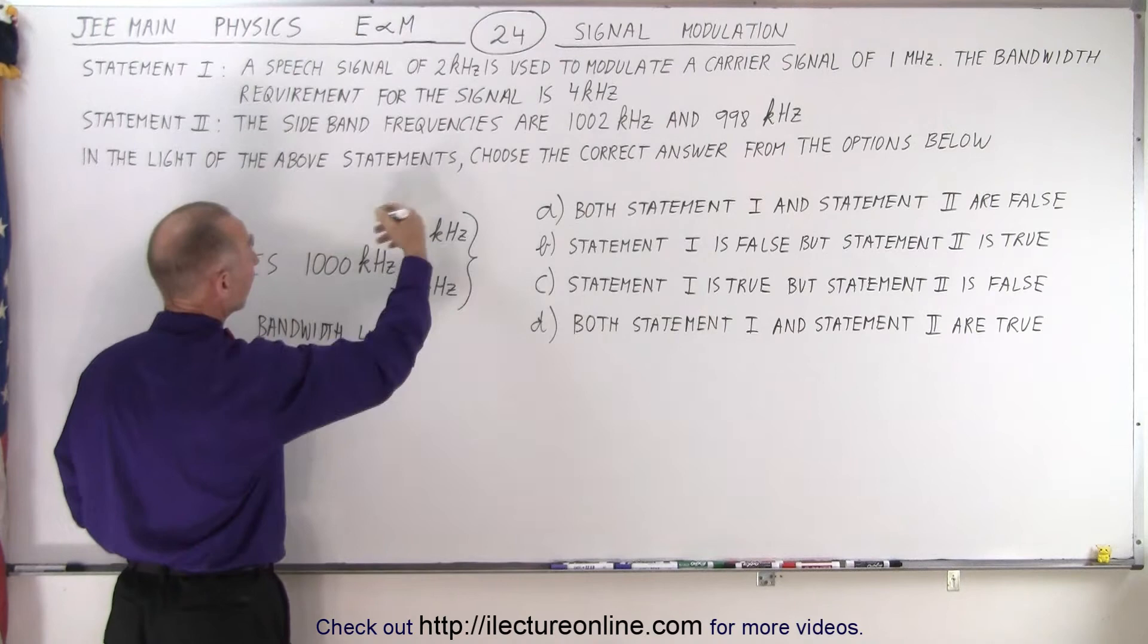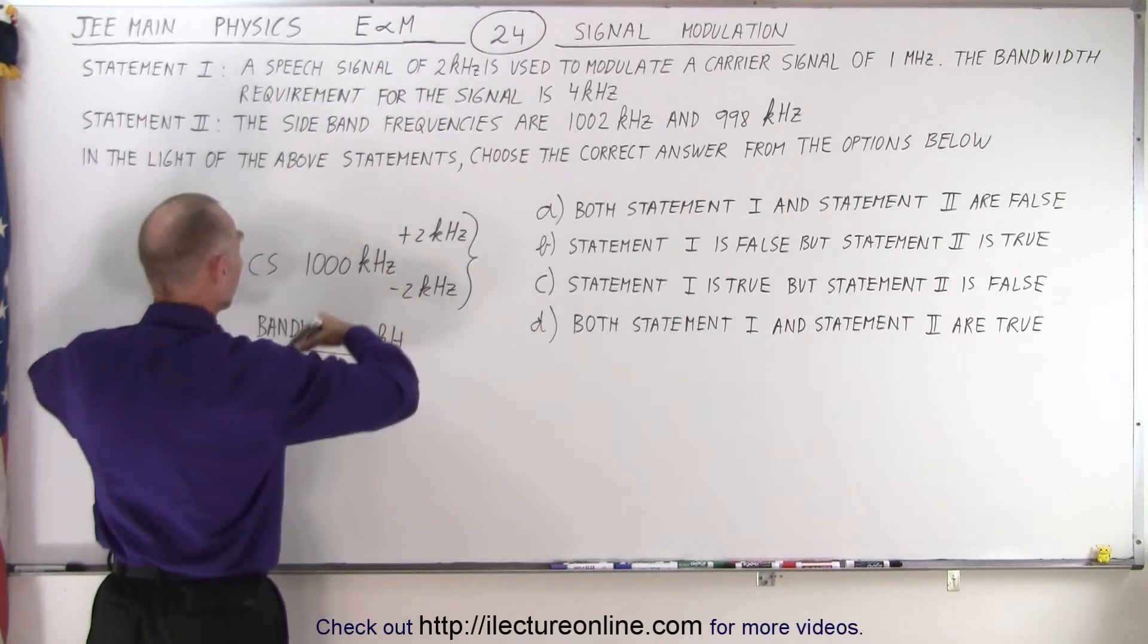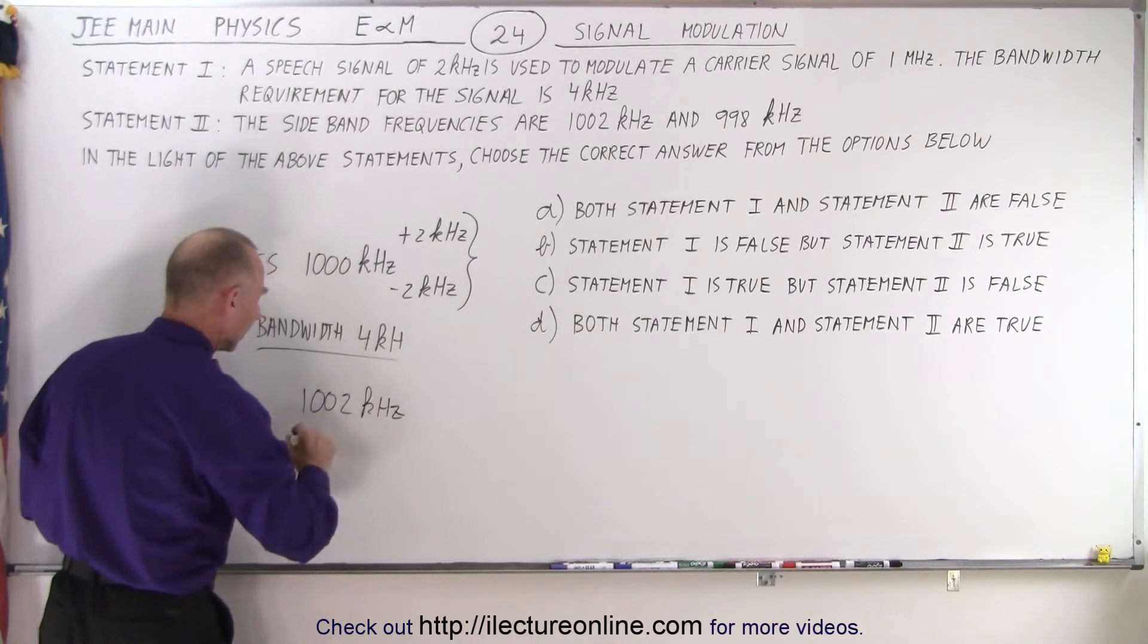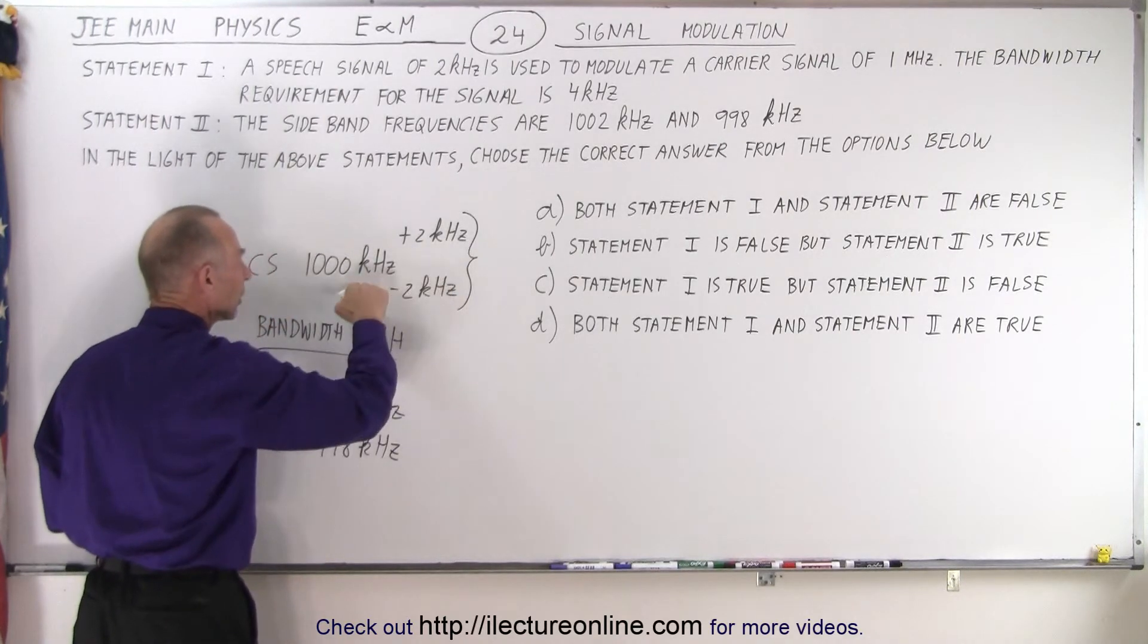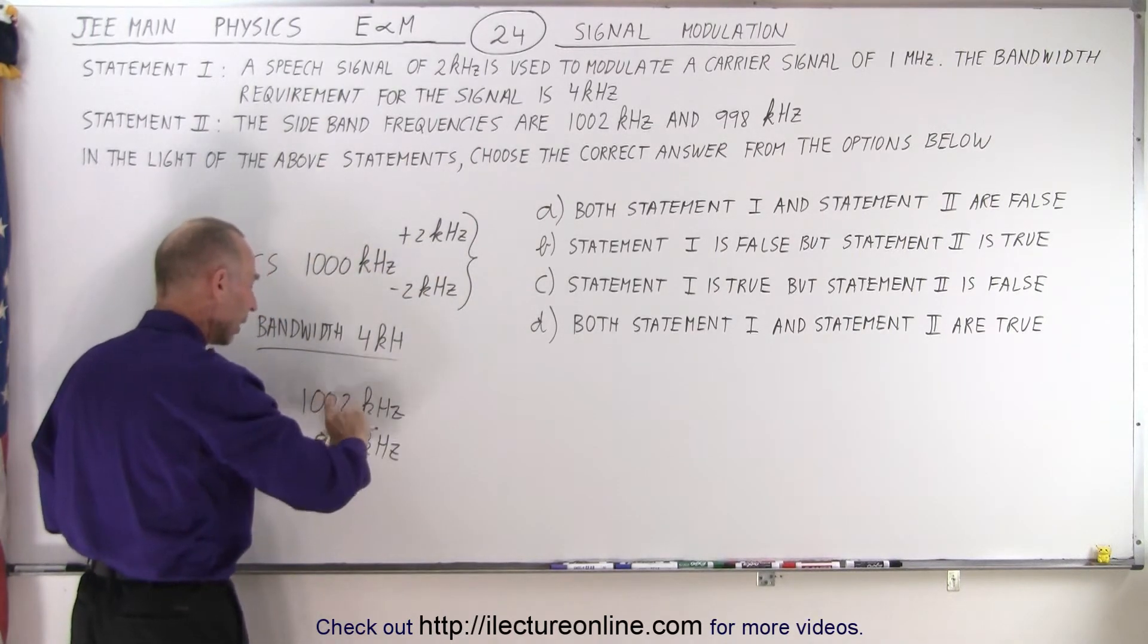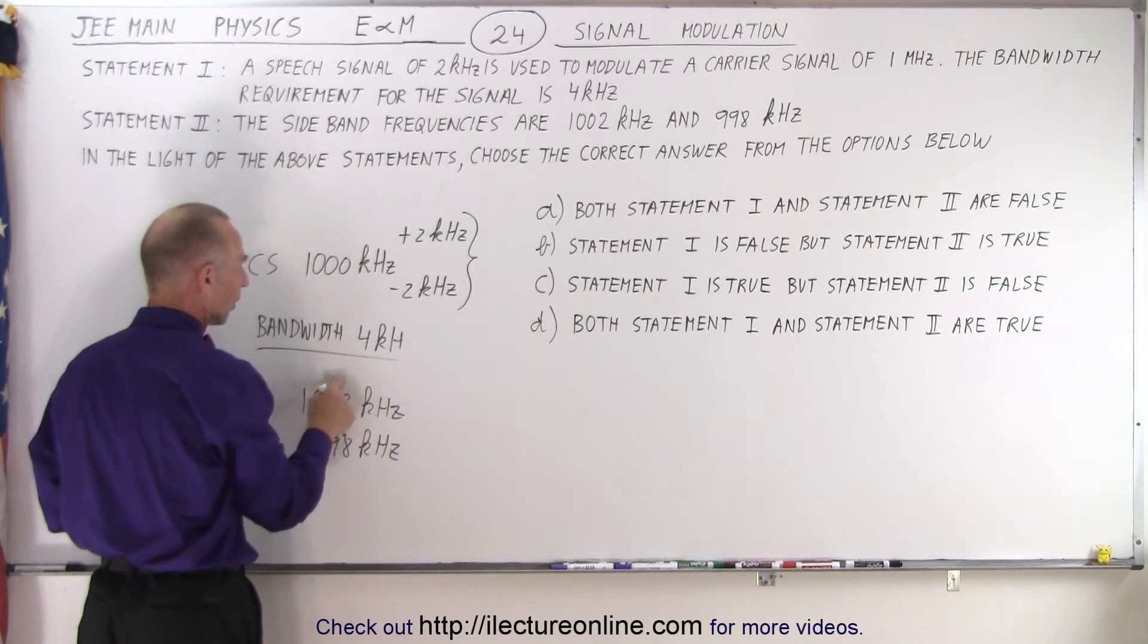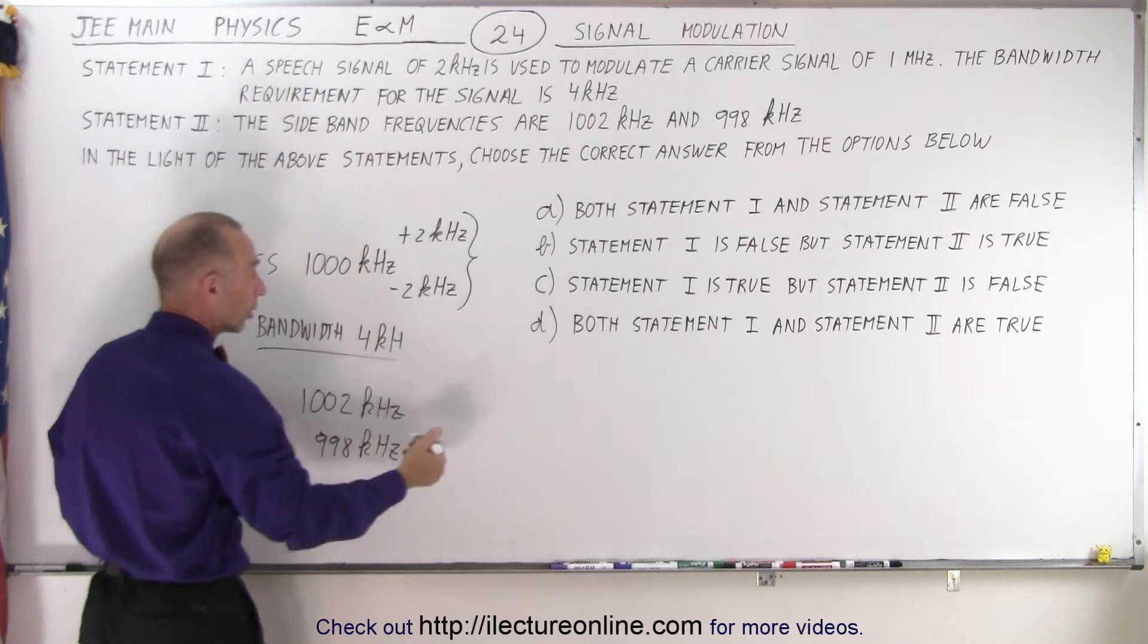So that means that we have the bandwidth of 4 kilohertz, so that would be called the bandwidth. And so therefore, when they say the bandwidth is 4 kilohertz, that is a correct statement. And that means that the carrier signal can be modulated all the way up to 1,002 kilohertz on the upper end and 998 kilohertz on the lower end by adding the 2 kilohertz to this or subtracting the 2 kilohertz. So it gives you the total bandwidth of 4 kilohertz. And the upper and lower limit of the signal would then be what we call the sideband frequencies, all the way up to 1,002 kilohertz and 998 kilohertz. So it turns out that both are correct statements.